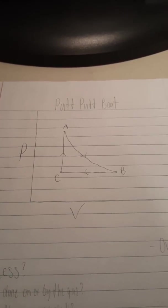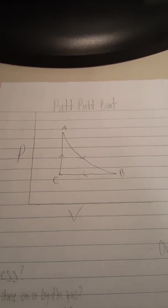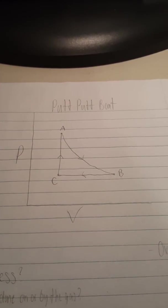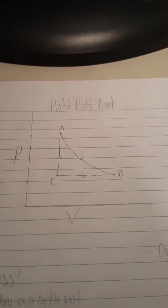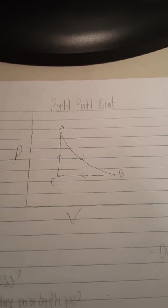And that is the explanation of a putt-putt boat and its PV diagram, covering all of its separate parts and the system as a whole.